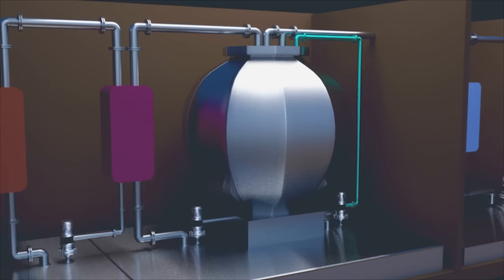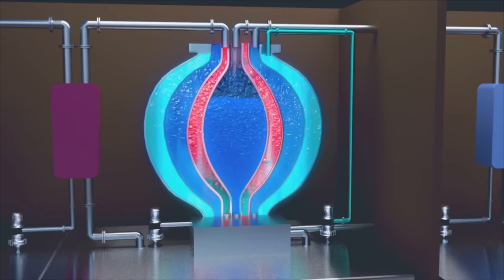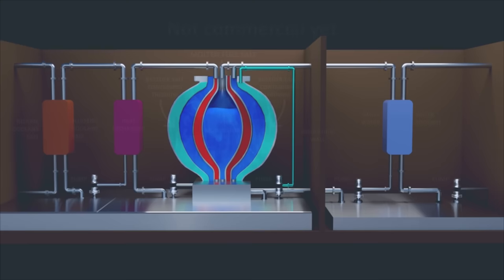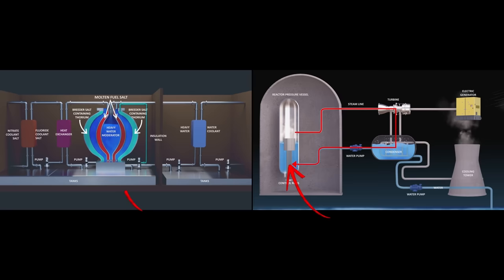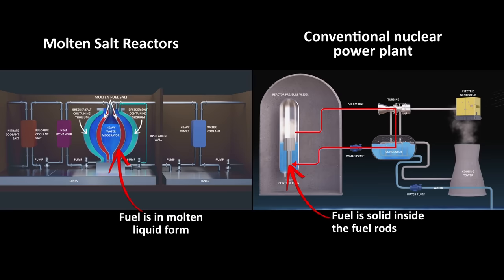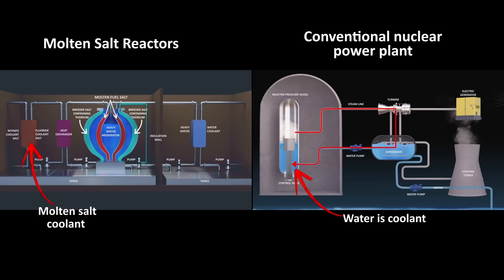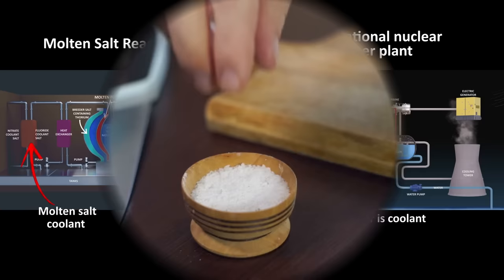Now let's contrast this with how molten salt reactors work. Keep in mind that as of January 2024, these types of reactors are in various stages of development and have not been commercialized yet. There are two main differences. First, instead of solid fuels, the fuel is dissolved in molten salt, which is in liquid form. The second difference is that instead of water as the coolant, they use a second molten salt as the coolant.